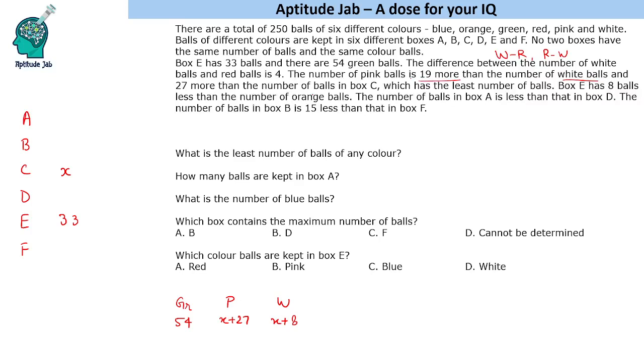Box E has 8 balls less than the number of orange balls. So we know that orange balls are 41. Now we know 4 colors here and 2 boxes here.